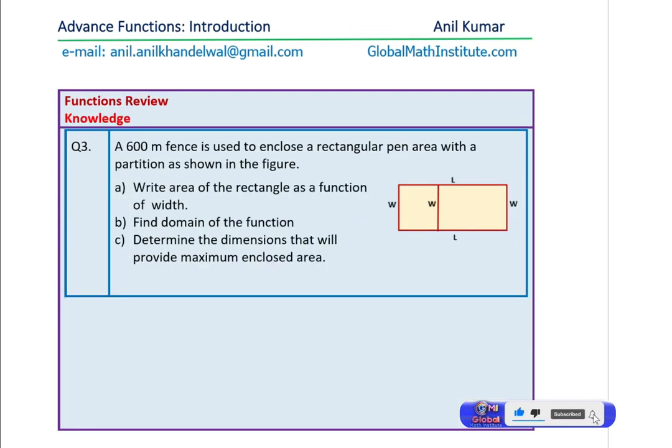Question number three is an application question. A 600 meter fence is used to enclose a rectangular pen area with a partition as shown in the figure. Write area of the rectangle as a function of width. Find domain of the function. Determine the dimensions that will provide maximum enclosed area. Very interesting question. This will give you your strength in quadratic functions.